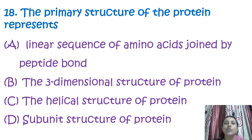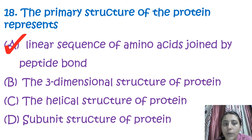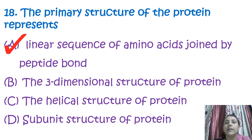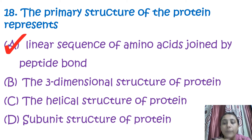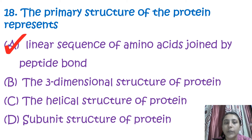The primary structure of a protein represents a linear sequence of amino acids joined by peptide bonds. Multiple amino acids are joined with the help of peptide bonds, forming a linear protein chain.